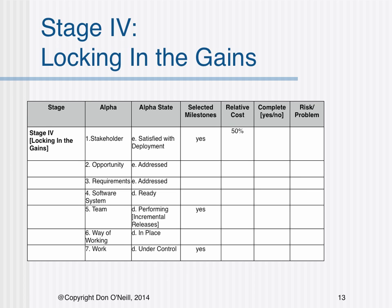Stage 4 entails obtaining stakeholder satisfaction with deployment. The opportunity has been addressed and the software system is ready. In addition, the team has performed incremental releases, the way of working is in place, and the work is under control. The critical selected milestones revolve around stakeholder satisfaction, the team performing incremental releases, and work under control.